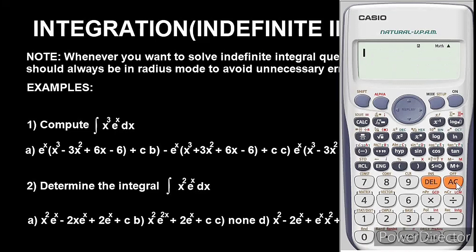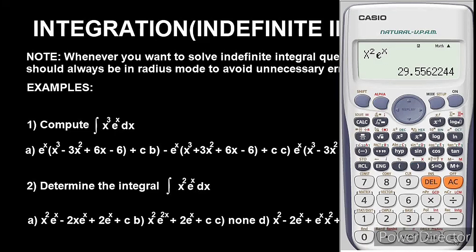Example 2 says: find the integral of x squared times e to the power x. Let's evaluate the integral function. We have x squared — Alpha X, squared — times e to the power x — exponential, Alpha X. Press equals and we get 29.55.